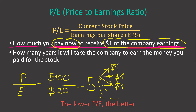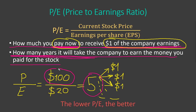Or there's another way to look at the P/E ratio — maybe this one will be easier to understand. It's how many years it will take the company to earn the money you paid for the stock. In our example, it's five years — it will take five years to make back that $100 you invested. Five times $20 equals $100. Both ways are correct, so it's up to you.